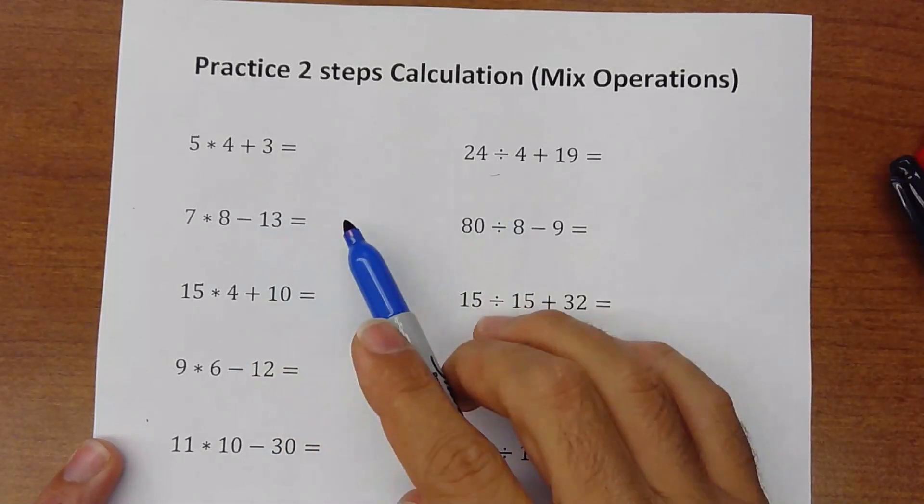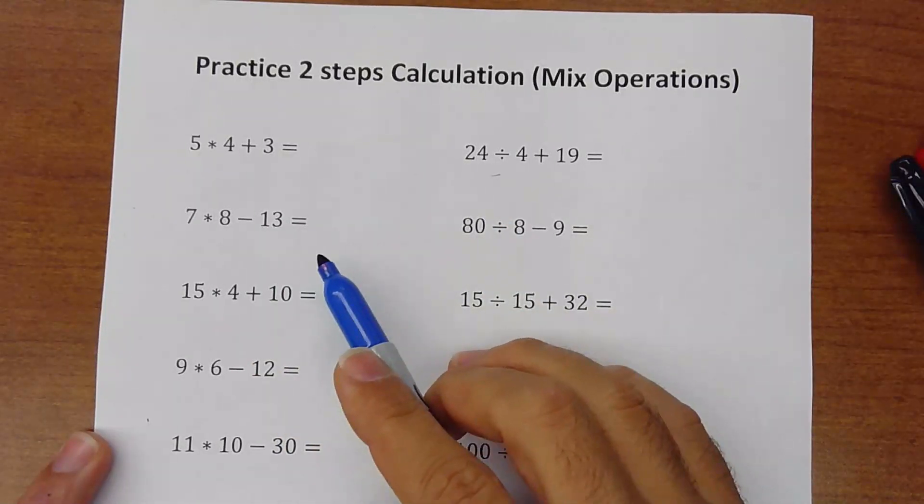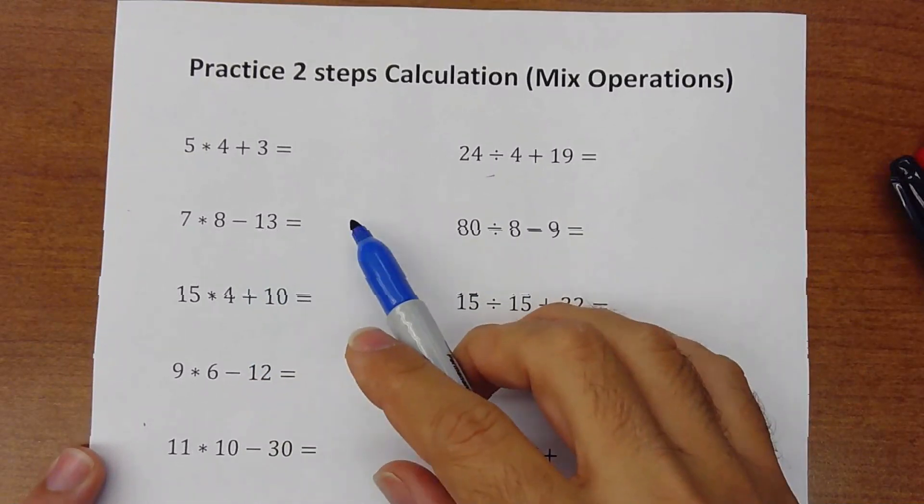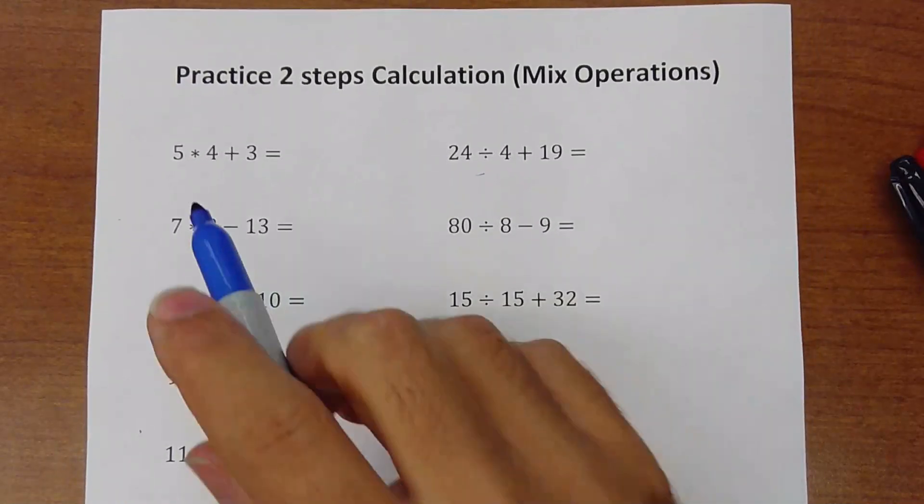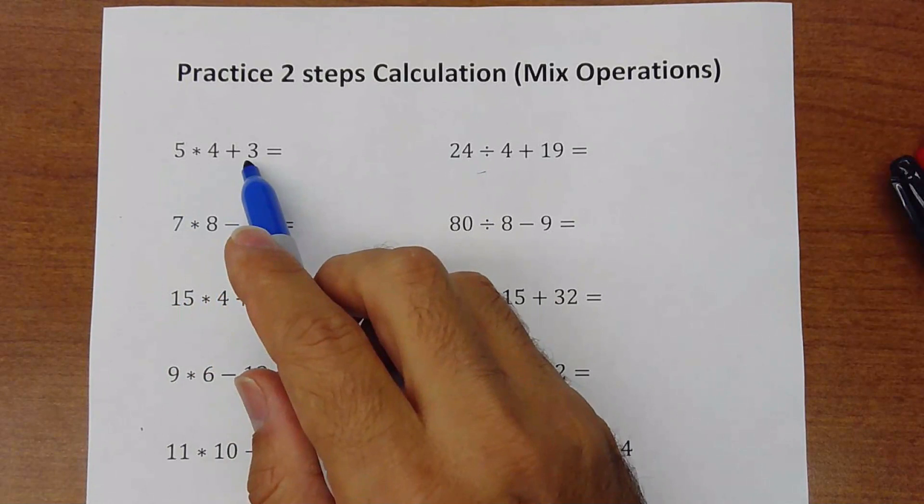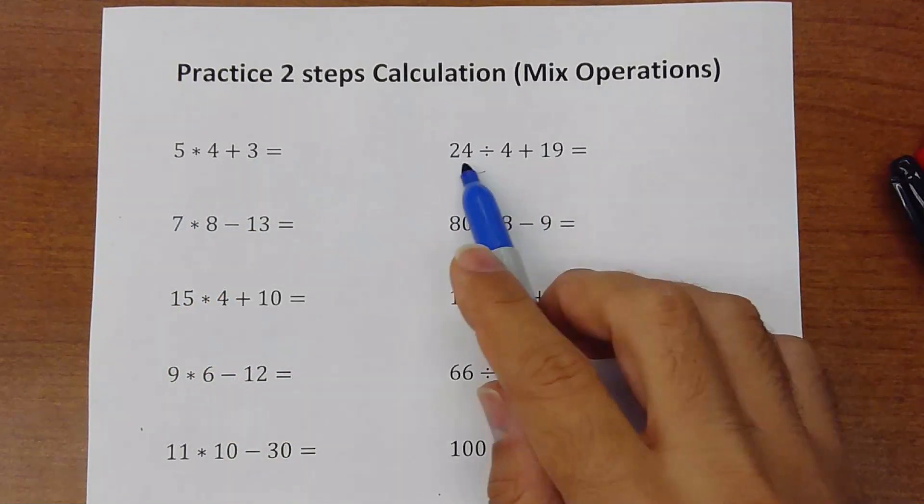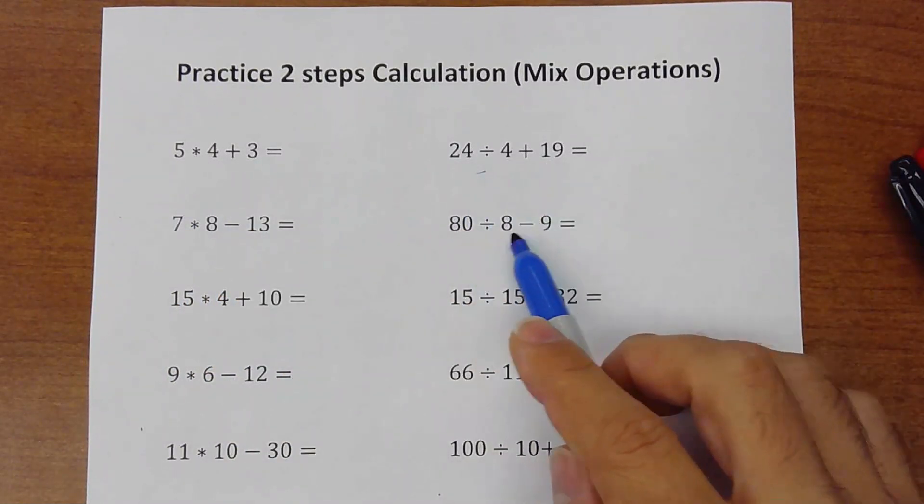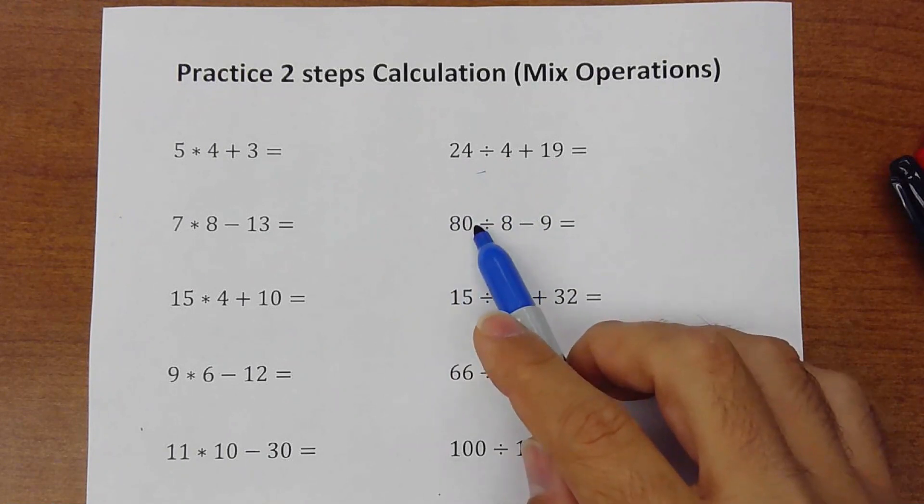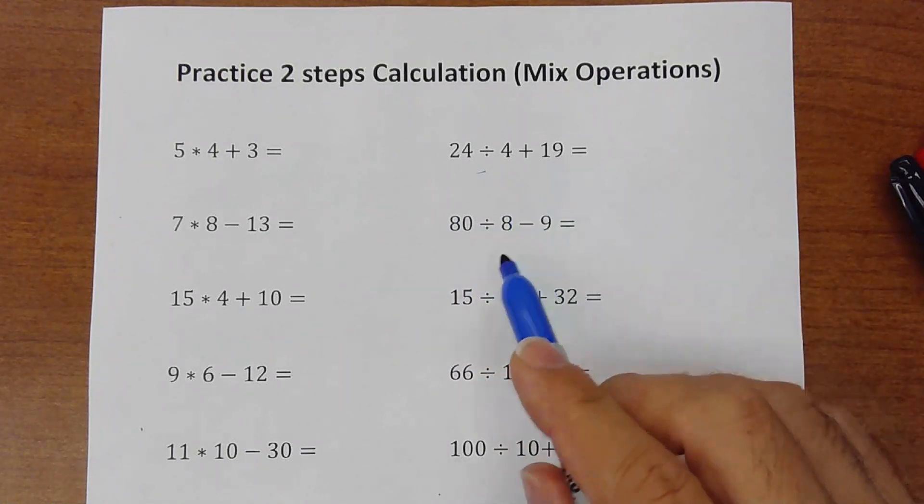So this is like the first step to do PEMDAS and to mix all the four operations, even parentheses and exponents in just one exercise. So here what we do is we multiply first and then we add, or we do a division first and then we add or subtract. So multiplication and division goes first and then the other operation.